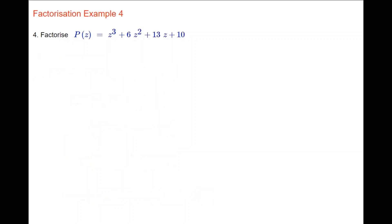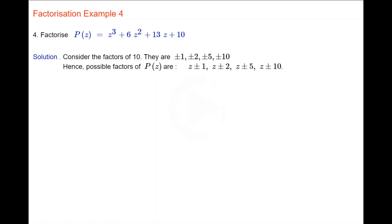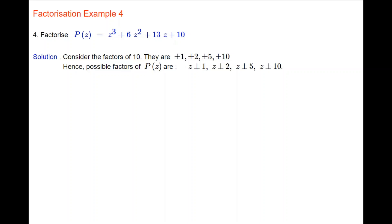Example 4 is longer and a little bit harder. We factorise p(z) = z cubed plus 6z squared plus 13z plus 10. To get the first factor, we use the factor theorem. We look at the constant term, which is 10, and consider its factors: plus or minus 1, plus or minus 2, plus or minus 5, plus or minus 10. Hence the possible factors of p(z) are z plus or minus 1, z plus or minus 2, z plus or minus 5, z plus or minus 10.